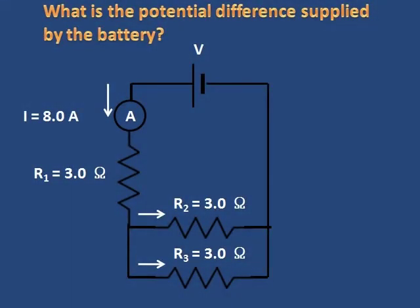Now we want to know the potential difference supplied by the battery. I look at this circuit and realize it's a combination circuit with a series portion and a parallel portion.